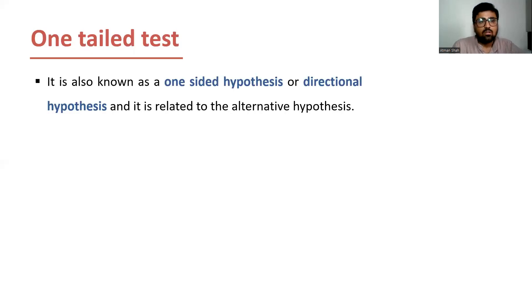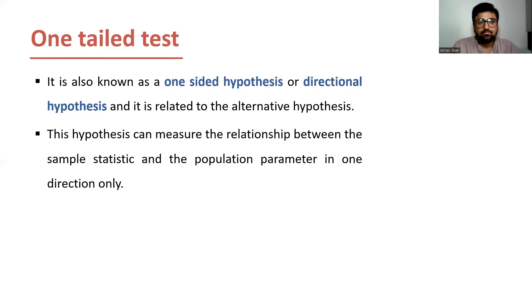Let's understand the idea of one-tailed test. It is also known as a one-sided hypothesis or directional hypothesis, and it is related to the alternative hypothesis. These hypotheses can measure the relationship between the sample statistic and the population parameter in one direction only.